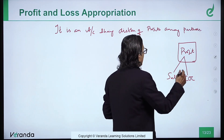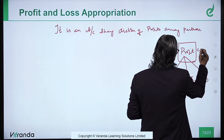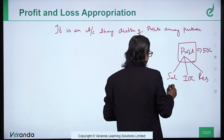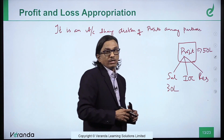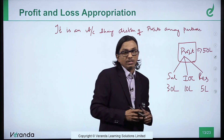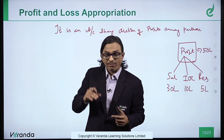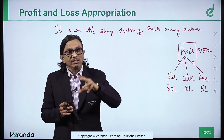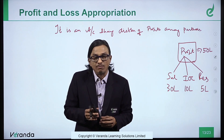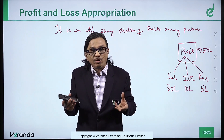For example, if the profit is 50 lakhs, you can pay salary to partners of 30 lakhs. You can pay interest on capital of 10 lakhs. From the balance of 10 lakhs, you can take 5 lakhs to reserves. The remaining 5 lakhs is shared by the partners in their profit sharing ratio. To show how the total profit is distributed — salary, interest on capital, reserve, and remaining profit shared — we prepare the profit and loss appropriation account.